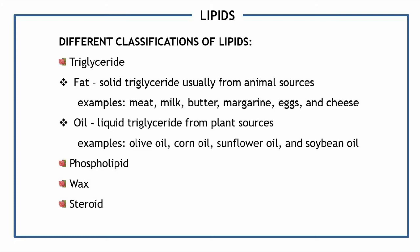We have different classifications of lipids. First is triglyceride, the most common type of lipid. Solid triglycerides, also known as fats, usually come from animals. Examples include meat, milk, butter, margarine, eggs, and cheese. There are also liquid triglycerides, also known as oils, which come from plants. Basic examples of liquid triglycerides are olive oil, corn oil, sunflower oil, and soybean oil.